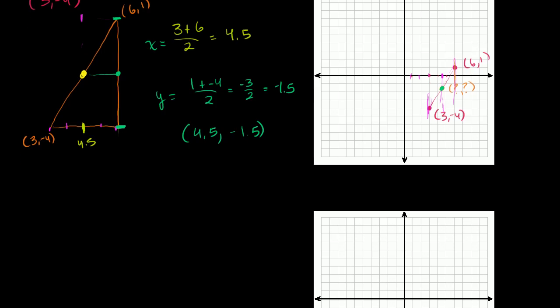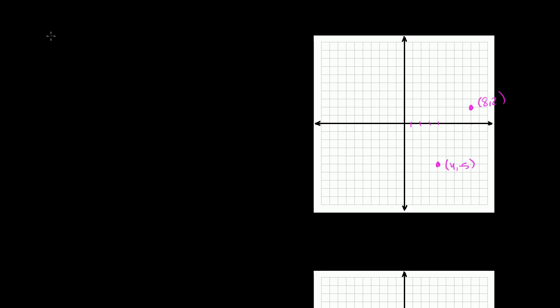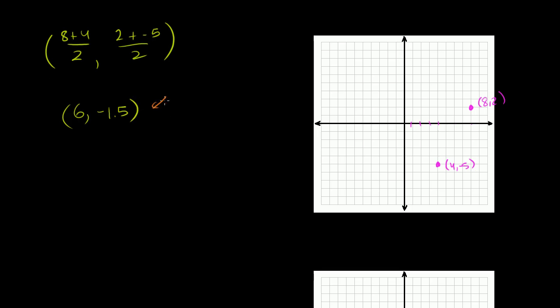Let's do a couple more of these — you're going to find they're very straightforward. Let's say I have the point 4 comma negative 5 and the point 8 comma 2. What is the coordinate of the midpoint? Well, we just average the x's and average the y's. The x values are 8 and 4, so it's 8 plus 4 over 2, which is 12 over 2, equal to 6. The y values are 2 and negative 5, so it's 2 plus negative 5 over 2, which is negative 3 over 2, equal to negative 1.5. So the midpoint is 6 comma negative 1.5.